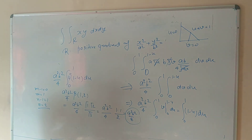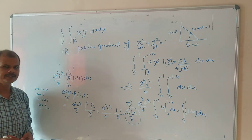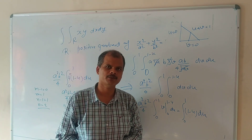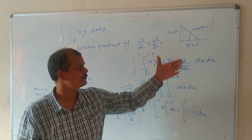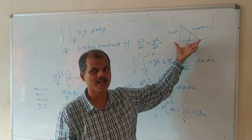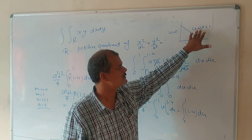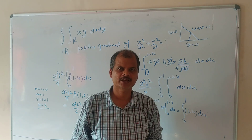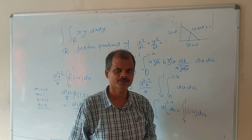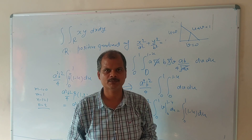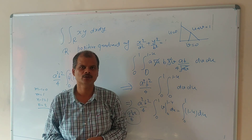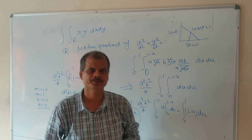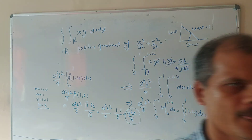So the answer is a²b²/8. This is the technique to solve double integration using beta and gamma functions. Always try to transform to the triangular region with u plus v equal to 1, so v equals 1 minus u, giving the form u(1−u) needed for the beta function. Thank you for watching. If you like this video, please like, share, and subscribe.